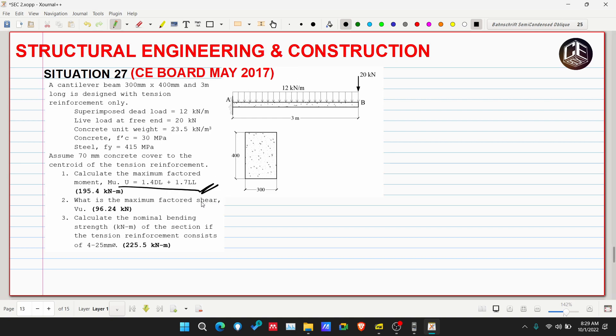For number one, the factored moment, the maximum moment is here at A. But notice our 12 kN per meter is superimposed dead load. Superimposed means additional load, separate from the own weight of our beam.